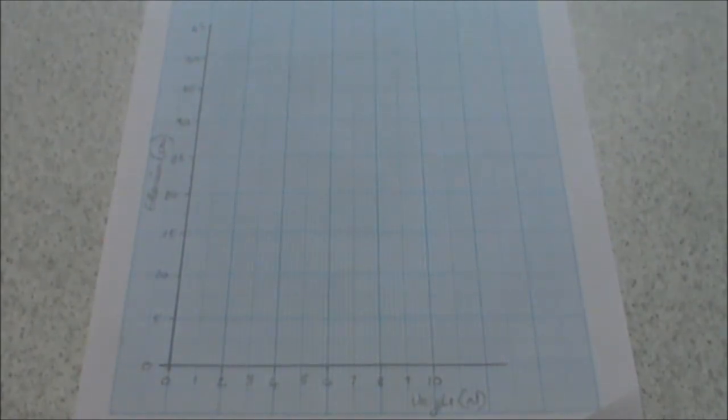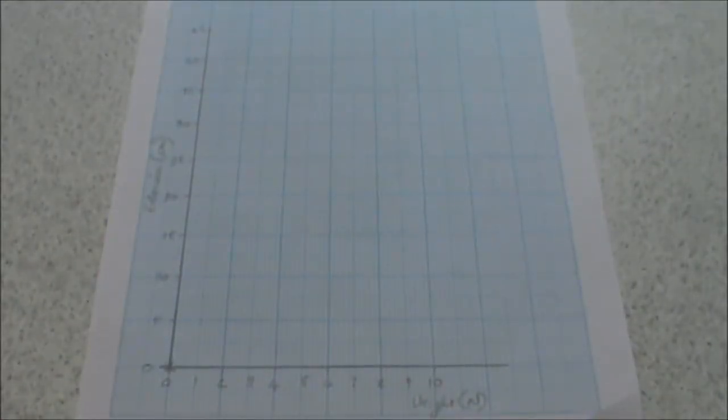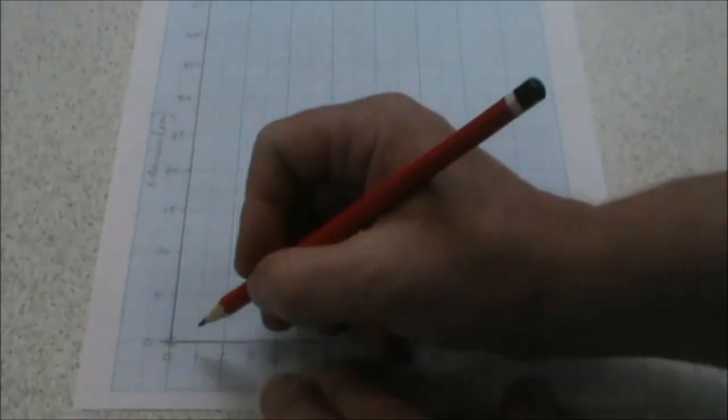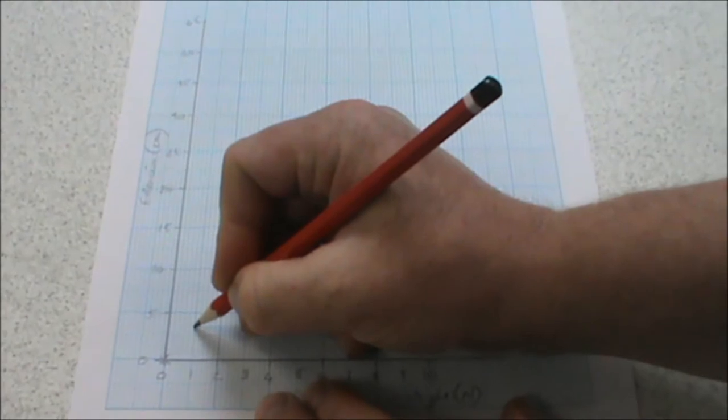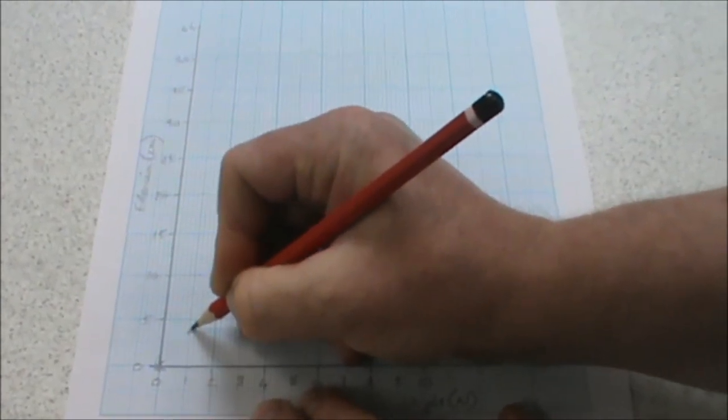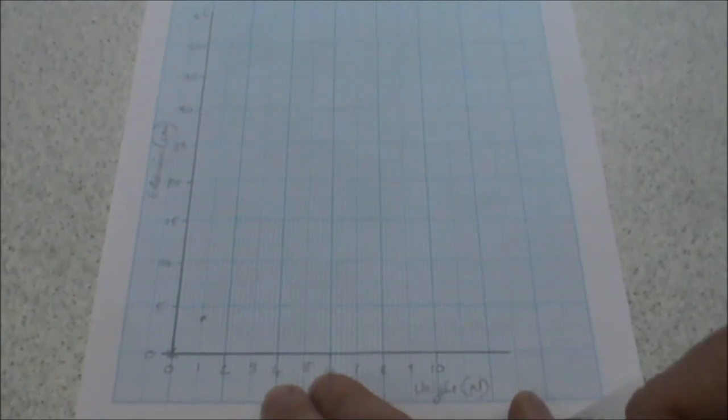Now we can plot our points. So our first point is 0, 0. Nice and easy. Next point is 1 and 3.8. 1, 2, 3, 3.5, 3.8. And now we can plot the rest of them.